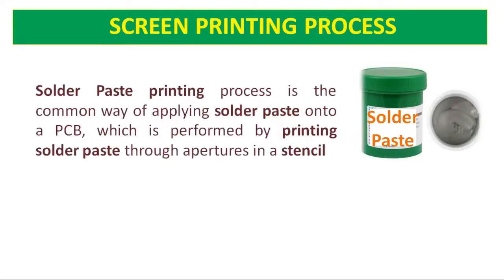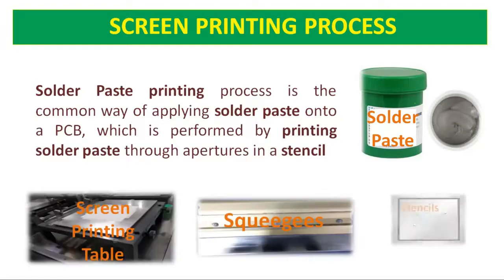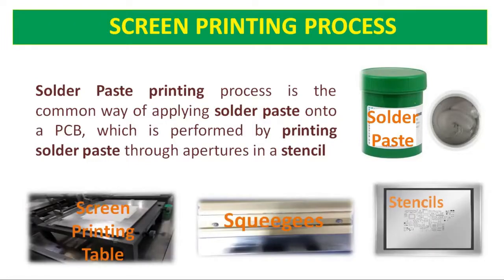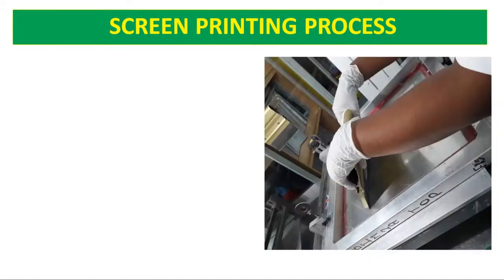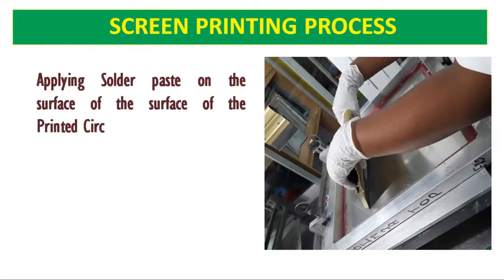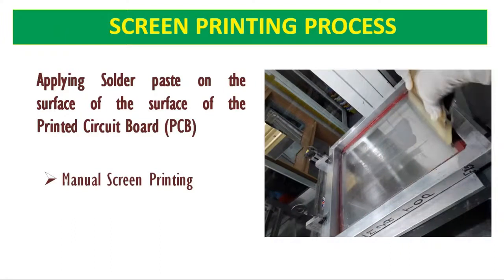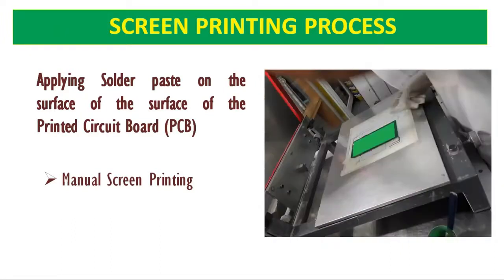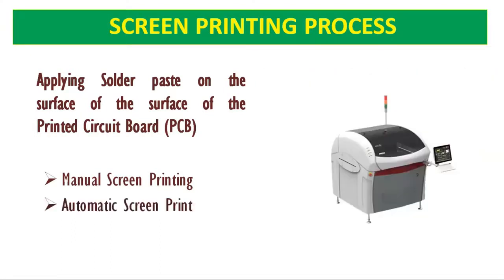The Screen Printing Process, or Solder Paste Printing Process, is the common way of applying solder paste onto a PCB, performed by printing solder paste through apertures in a stencil. Apparatus required: Solder Paste Screen Printing Table, Squeegees, and Stencils. Small-scale industry can use manual pasting; large-scale industry can use automatic screen pasting.